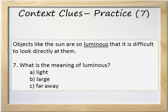Number 7: Objects like the sun are so luminous that it is difficult to look directly at them. What is the meaning of luminous? A. Light. B. Large. Or C. Far away. The answer is A. Light. We could guess that answer using context clues.